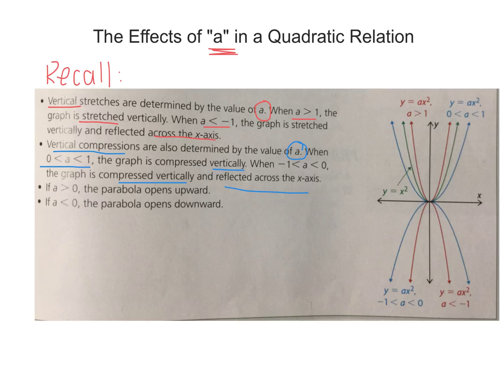If A is greater than 0, the parabola opens upward, and if A is less than 0, the parabola opens downward. Looking at the sketch given here, we can find the parent function in green. The parent function means the parabola's equation is y equals x squared, meaning A is equal to 1.